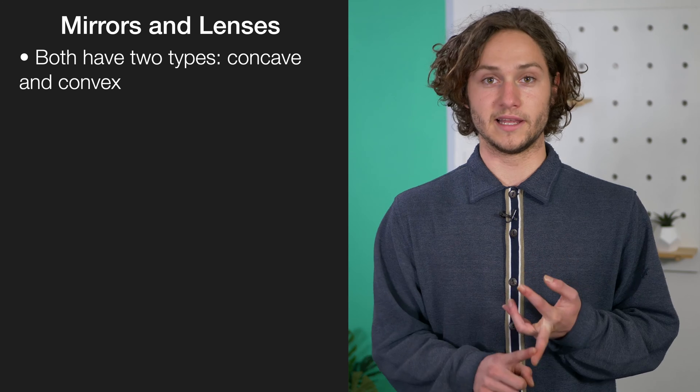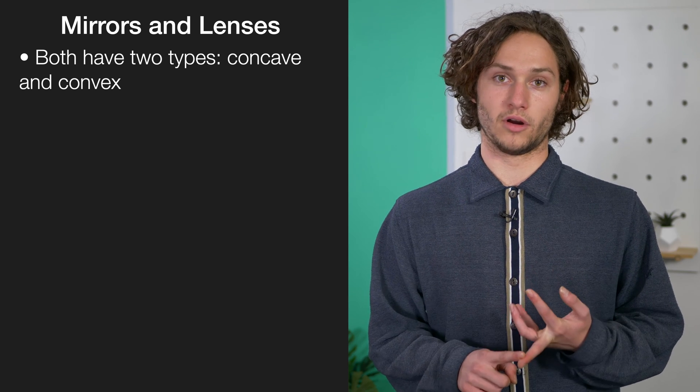That's a lot of information, so let's break it down. Mirrors have two types, concave and convex. Lenses have two types, concave and convex.